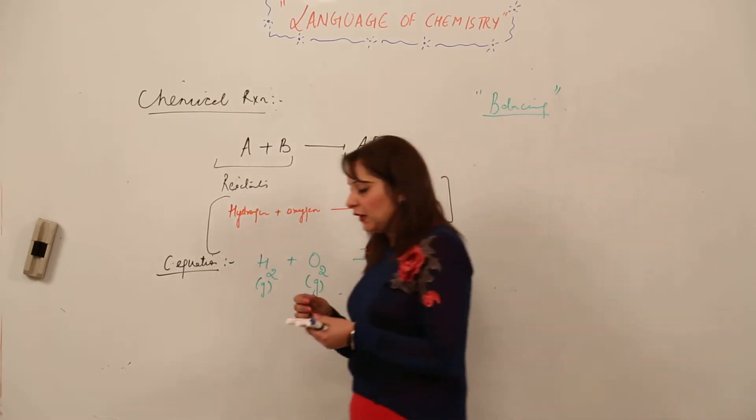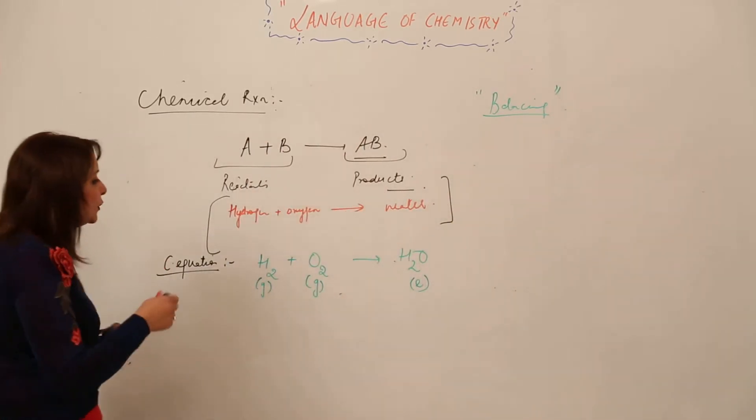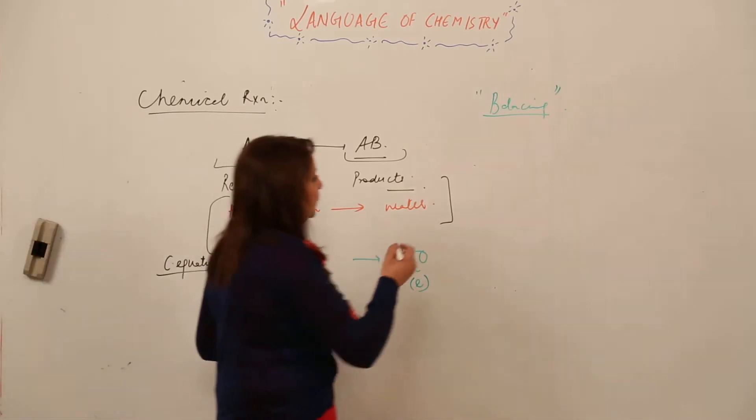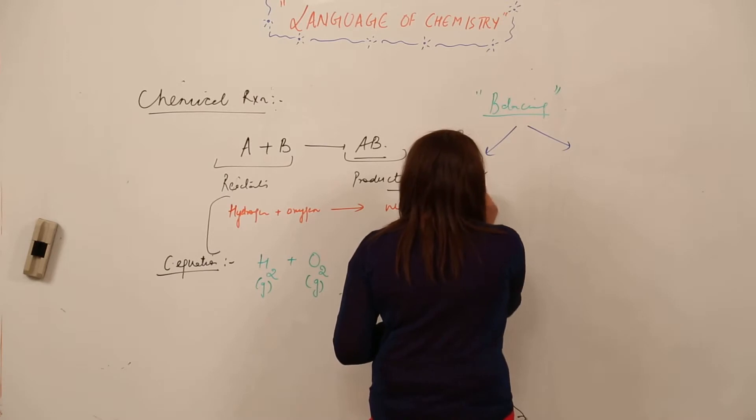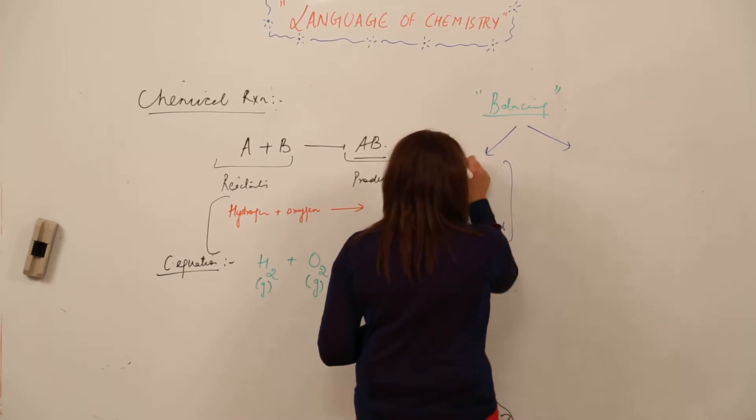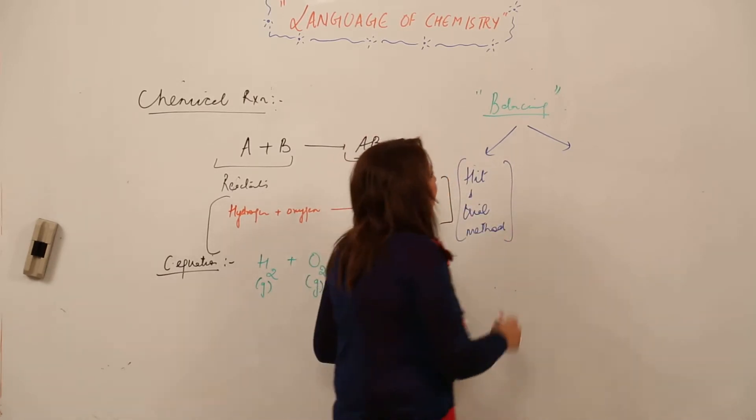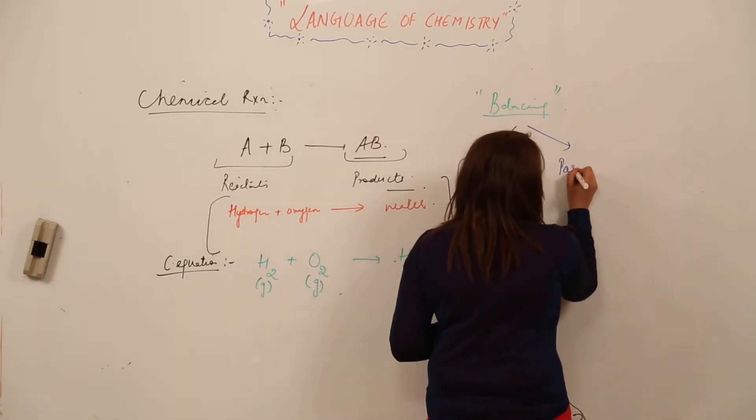For balancing we have two kinds of different methods. One is the hit and trial method, which is the common way to balance the reaction, and the other is the partial equation method.